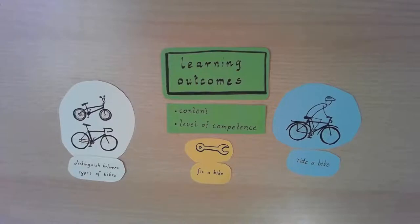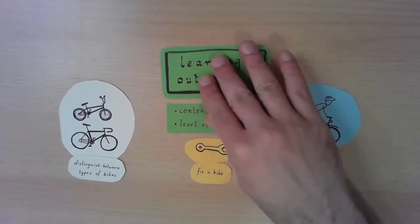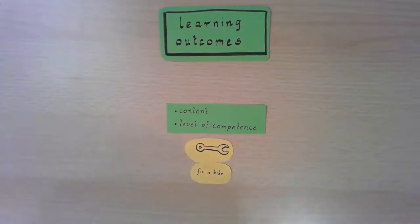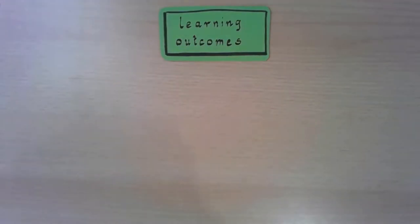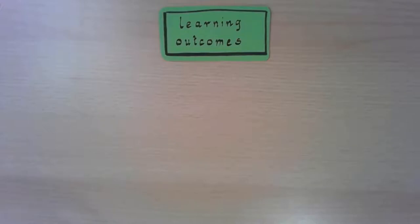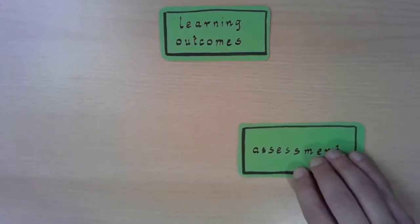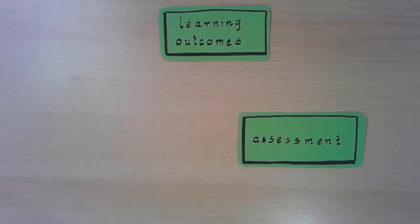Now that you've defined your learning outcomes, what is the second thing you should think about? Usually you would start planning your materials and methods, but John Biggs says now is the best point to think about your assessment. Why is this so important? Because if you are not able to assess your learning outcomes at the end of the term, it's really hard to bring the students on board.